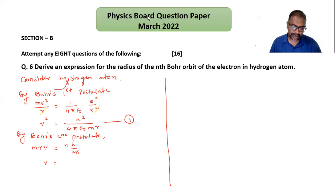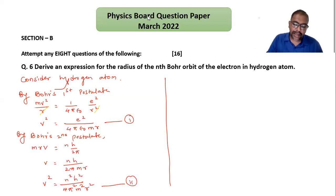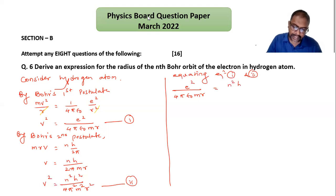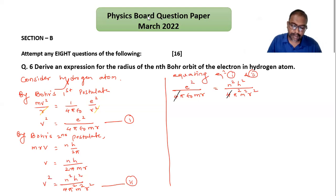Equation one and two both give us v square. Equating equation one and two: e² divided by 4π ε₀ m r equals n²h² divided by 4π²m²r². Now we cancel the common terms — 4, one π, one m, and one r from r square all get cancelled.